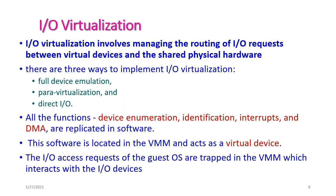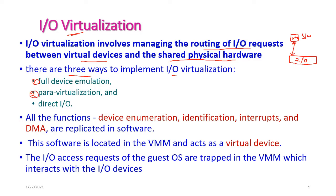I/O virtualization involves managing the routing of I/O requests between virtual devices and shared physical hardware. Physical hardware has I/O devices, and these must be allocated to virtual machines in the form of software. There are three ways to implement I/O virtualization: full device emulation, para-virtualization, and direct I/O. Functions such as device emulation, identification, interrupts, and DMA (direct memory access) are replicated in software.